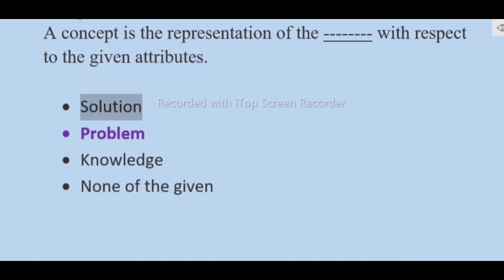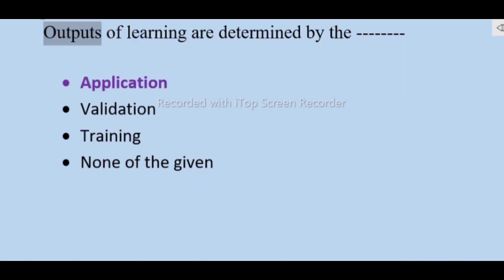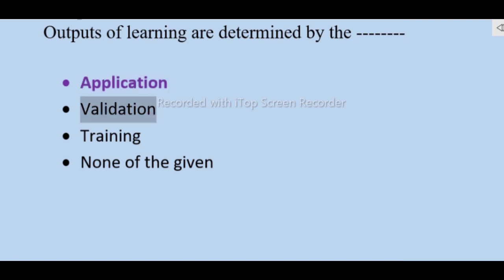A concept is the representation — not solution, problem, knowledge, none of the given. Outputs of learning are determined by the training — not application, validation, none of the given.